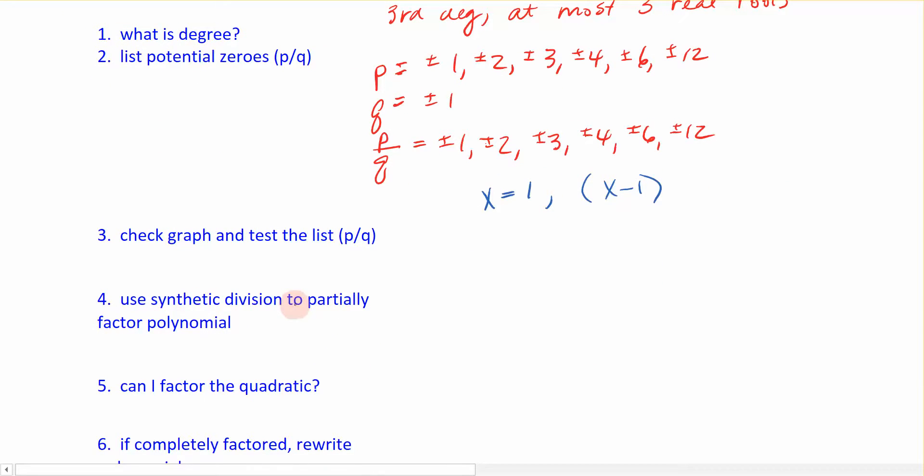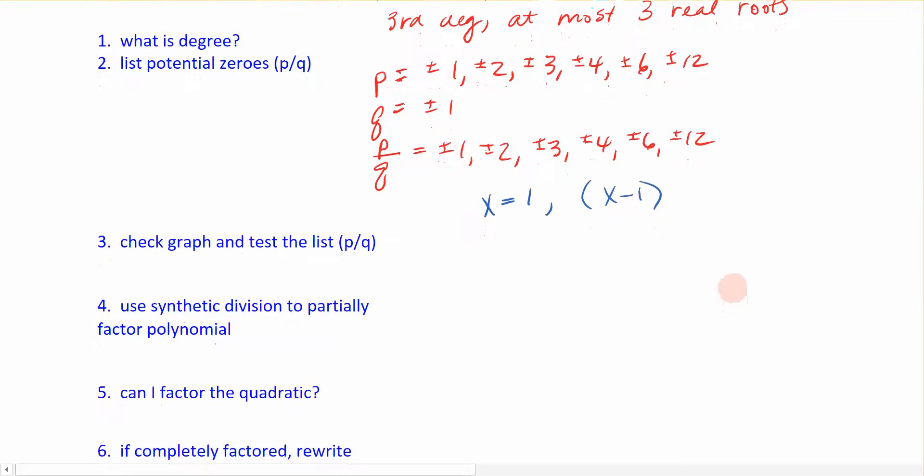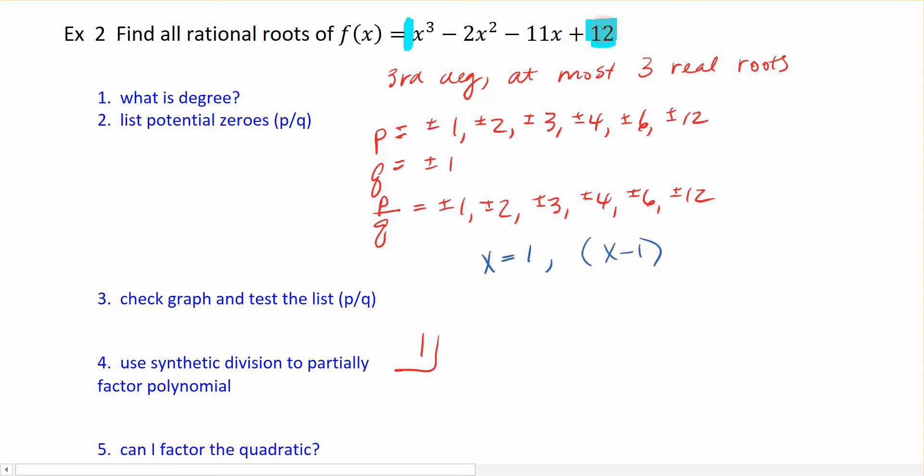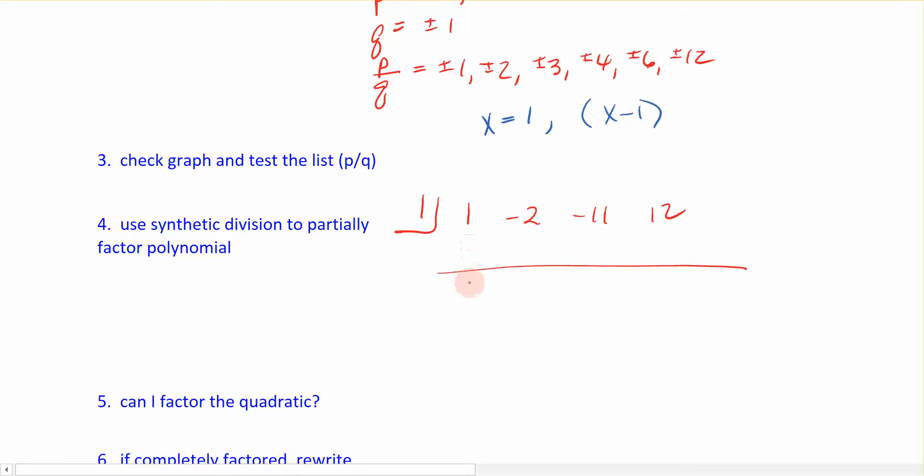Now, we're going to come down, and we're going to use synthetic division to partially factor this polynomial. Because if x minus one is a factor of this, then I can divide this polynomial by this factor to reduce it, so I can maybe factor it using the quadratic formula or something. So, we're going to use synthetic division with this factor here. So, I'm going to start with one, put my upside down house there, and let me scroll up. I'm going to use synthetic division on the polynomial up here. So, I have a 1, negative 2, negative 11, and positive 12.